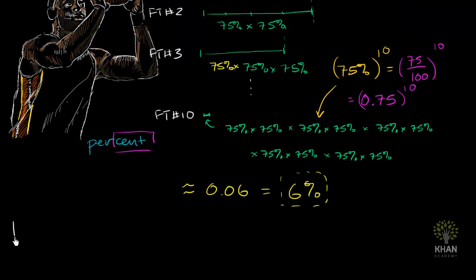The probability of making, let's call it n, where n is the number of free throws we care about, n free throws in a row for somebody, and we're not just talking about LeBron here, it's going to be their free throw percentage to the number of free throws that we want to get in a row, so to the nth power.